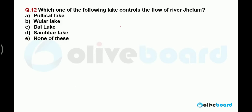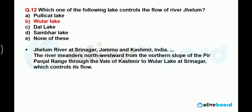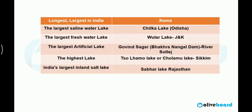Which lake controls the flow of the Jhelum River? The correct answer is Wular Lake. Wular Lake controls the flow of the Jhelum River. It is situated in Srinagar, it is the largest fresh water lake in India, and it was formed with the help of the Jhelum River — so it controls the flow of the Jhelum River.